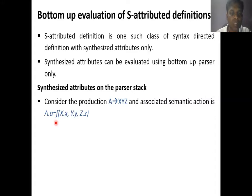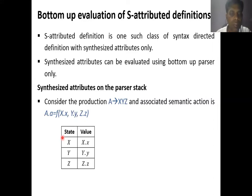There are two kinds of stacks present. One is the parse stack and another is the value stack. On the parse stack we store the grammar symbol, and in the value stack we store the lexical value. The order of storage is: x.x will be stored first, then y.y, and then z.z. So z.z is at the top of the stack, and x.x is at the bottom. The grammar symbol and its corresponding synthesized attribute are stored this way.